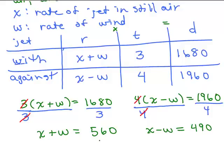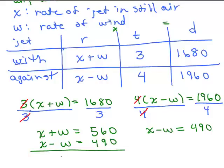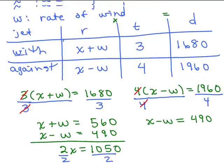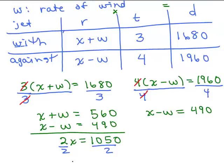So we have two equations: X plus W equals 560, and X minus W equals 490. If we use the addition method, note that the W's will cancel out. Adding the two equations gives 2X equals 1,050, and dividing both sides by 2 gives X equals 525.